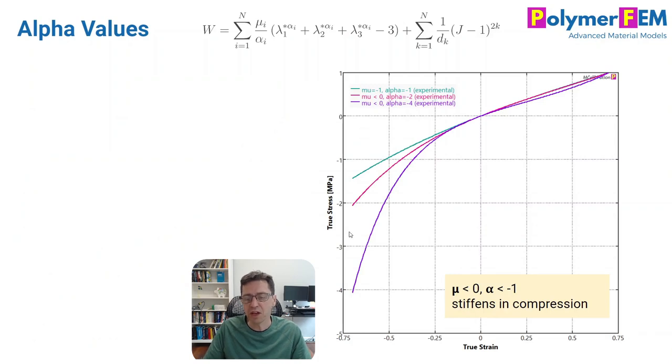Now, what if we change things a little bit and we make mu a negative number and we make alpha also a negative number? So negative, negative, this is still a well-defined energy function. What happens now is as we go from alpha equal to minus 1 to minus 2 to minus 4, we'll see that a larger negative alpha term causes a stiffening effect in compression, but not so much of a difference in tension.